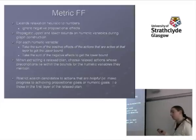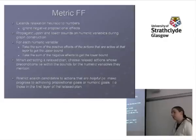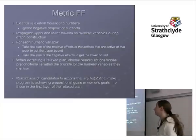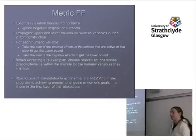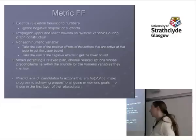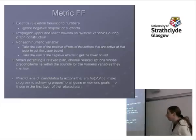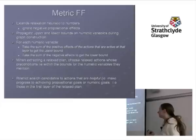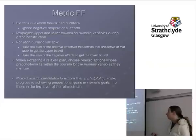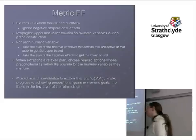So how do we compute these? At each planning graph layer, take the sum of the positive effects of the actions, add that to the value it was in the previous layer, and that gives us the upper bound. The lower bound is similar: take the sum of the negative effects — all actions that have a negative effect on that fluent — and take that off it, giving us the lower bound at the next layer. When we extract a relaxed plan, we choose actions whose preconditions lie within the bounds. So we can only apply an action if the value it requires in its precondition is within the bounds at the given layer.